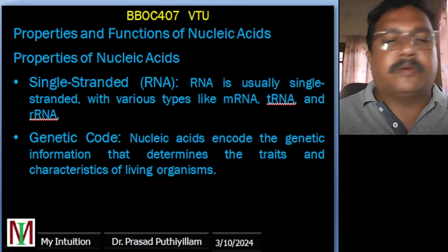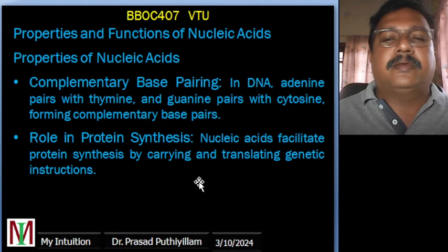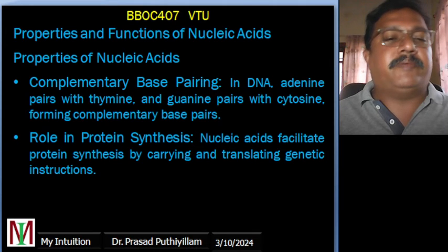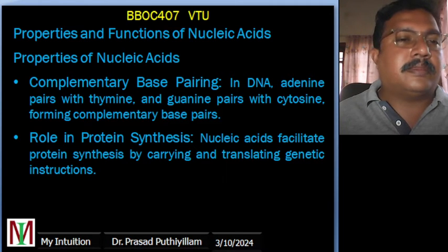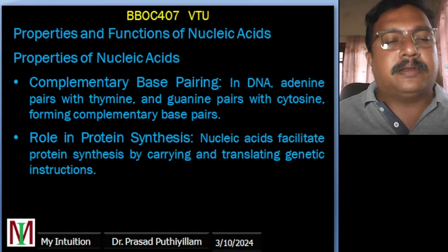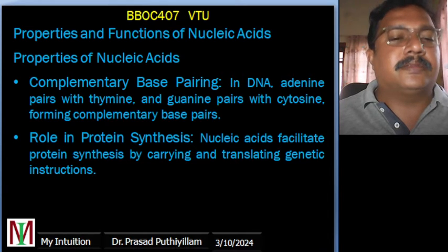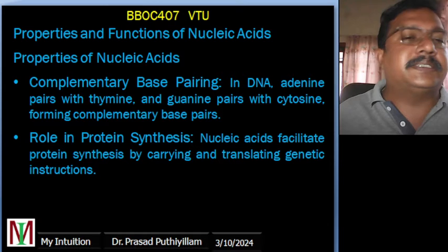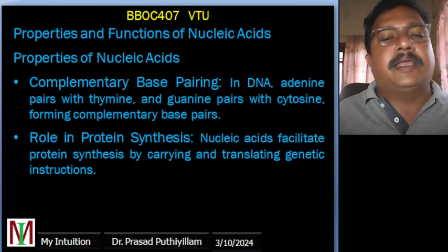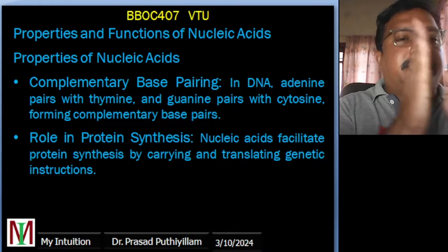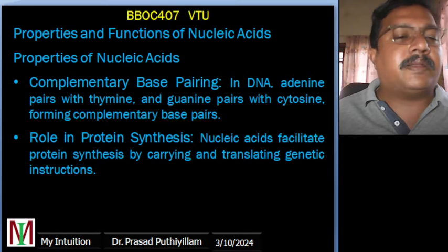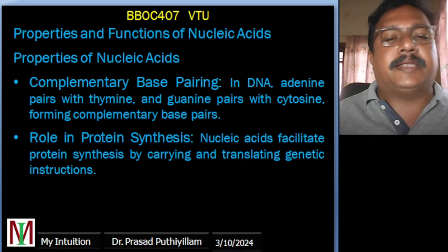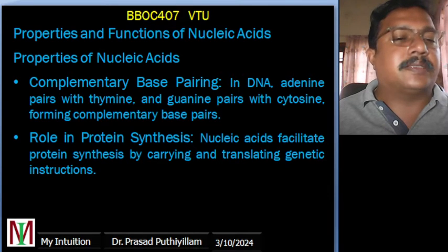Complementary base pairing is another key property. In the double helical structure of DNA, adenine (A) always pairs with thymine (T), and guanine (G) always pairs with cytosine (C). These complementary pairs hold the two strands together and facilitate the copying of genetic information during cell division and reproduction.